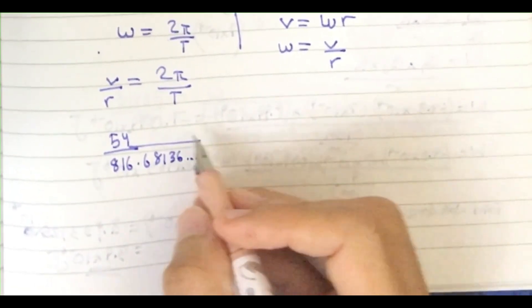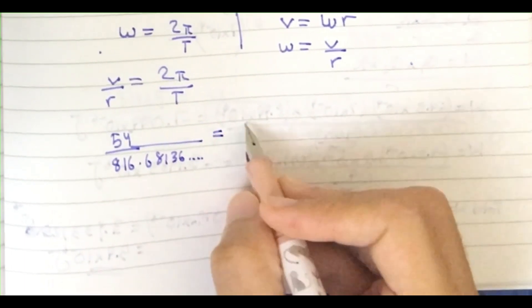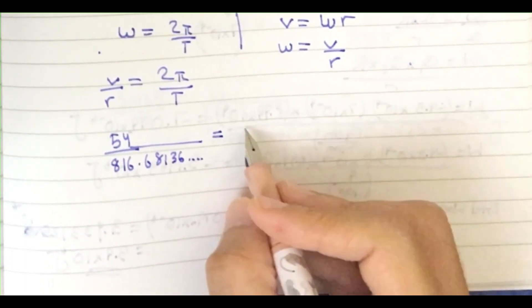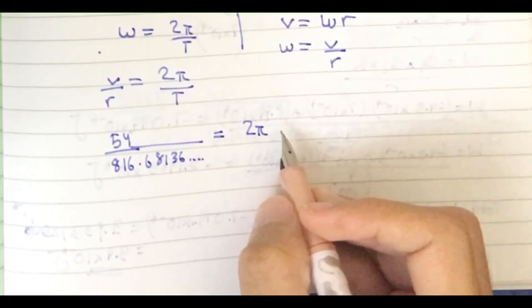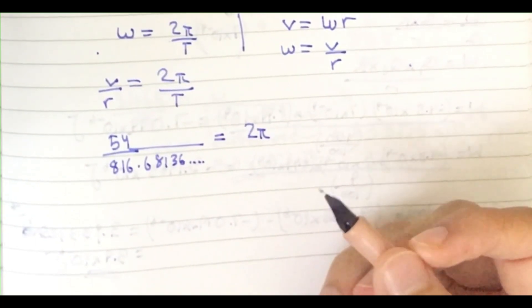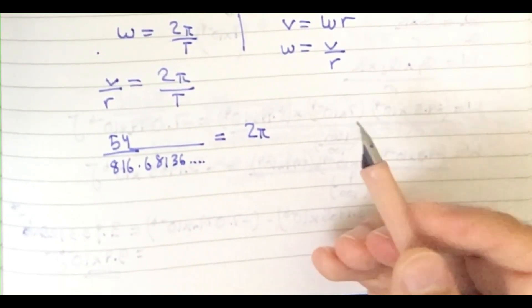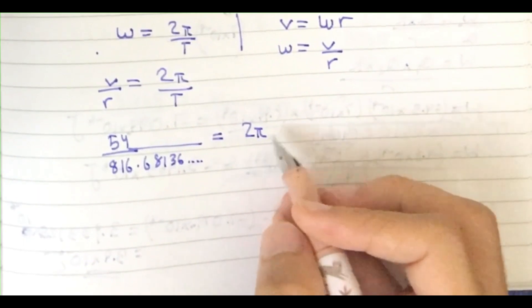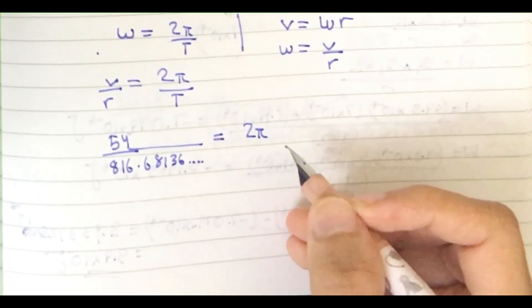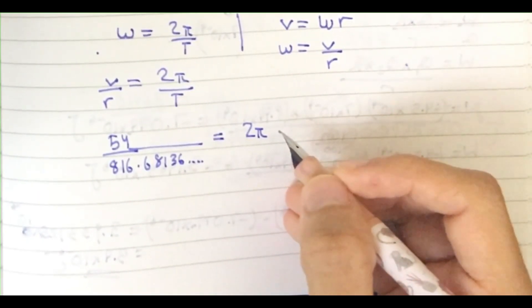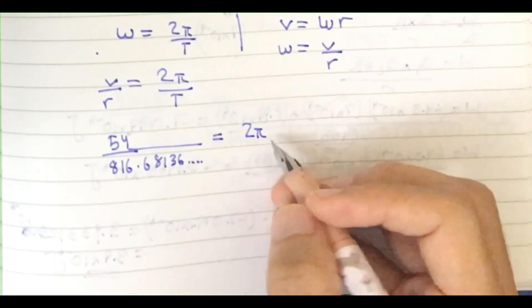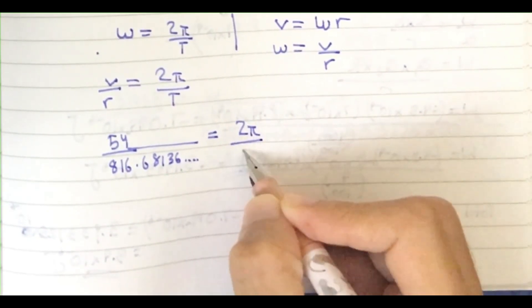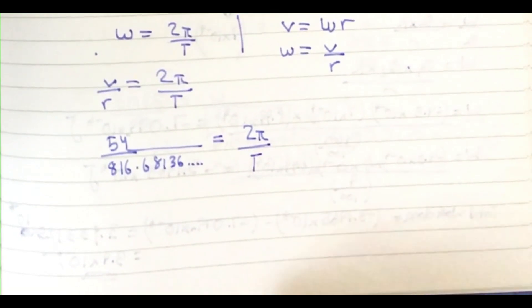This equals 2π. 2π is basically 360 degrees, but we don't need 360 as our answer; we need the time for just 90 degrees. I'm going to calculate for 360 first and then divide by 4. It's much easier that way.